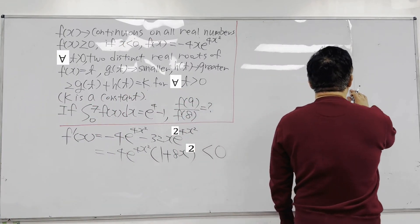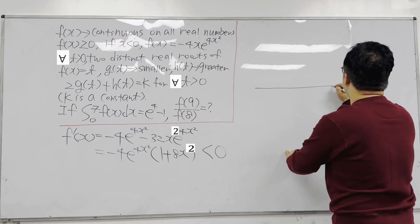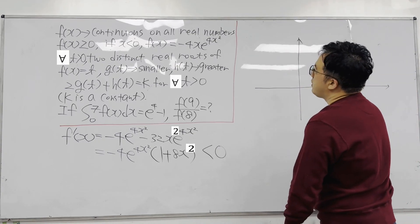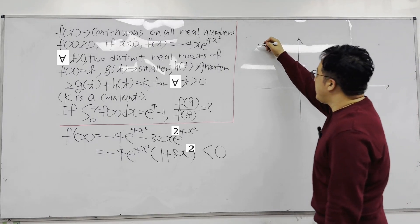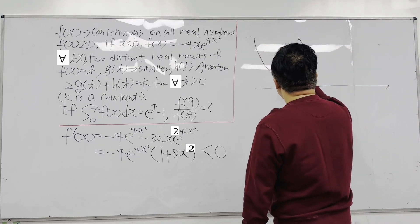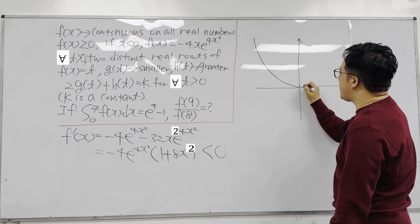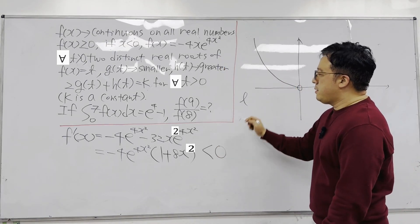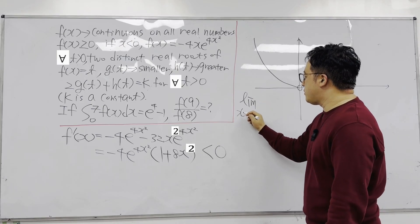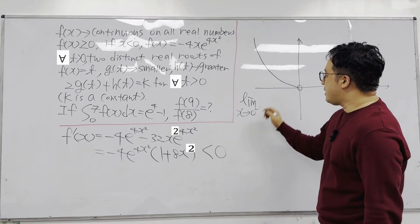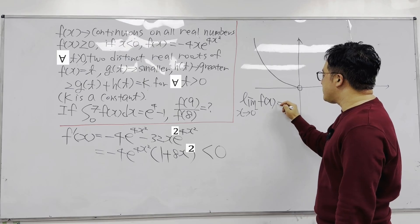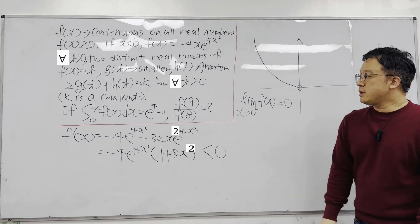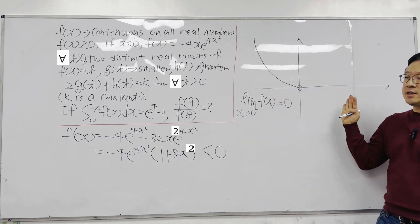We can start drawing the graph with x-axis and y-axis. When x is less than 0, the function is decreasing. We also know that the left-sided limit of f(x) as x approaches 0 equals 0. Now the question is what happens when x is greater than 0.